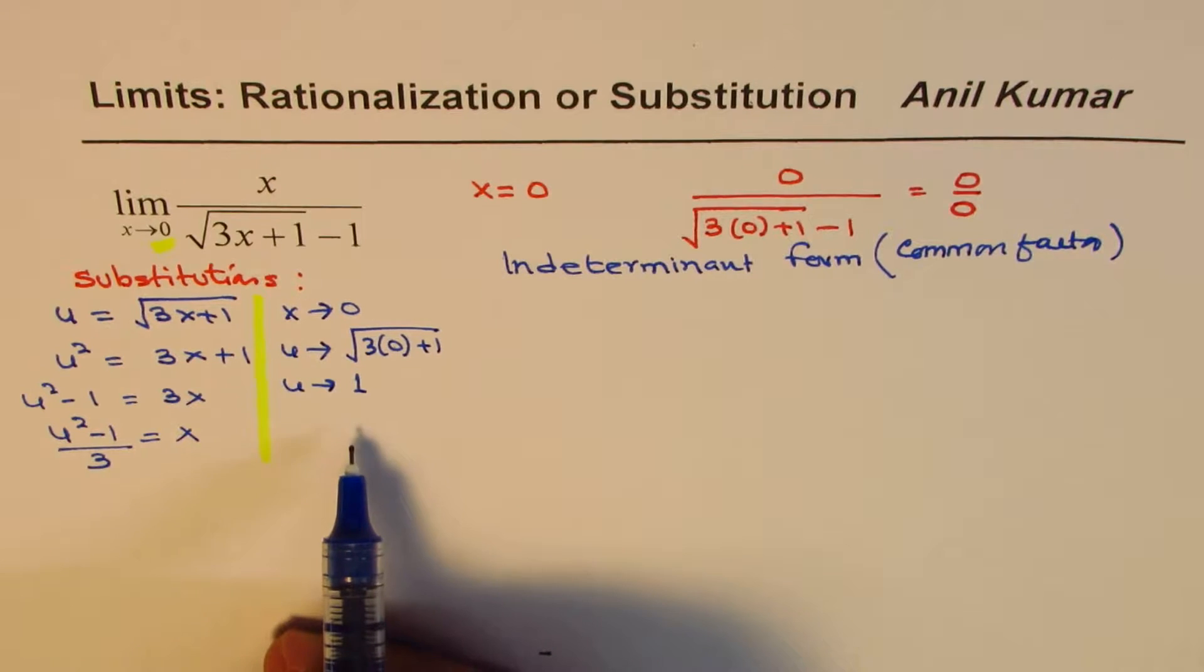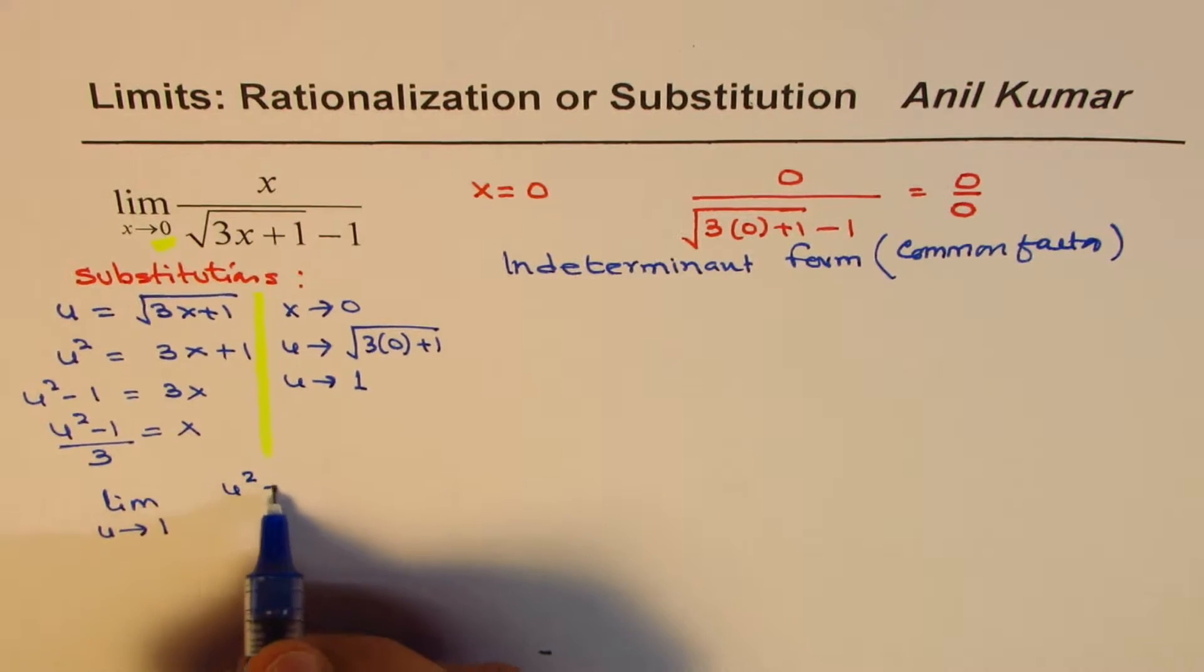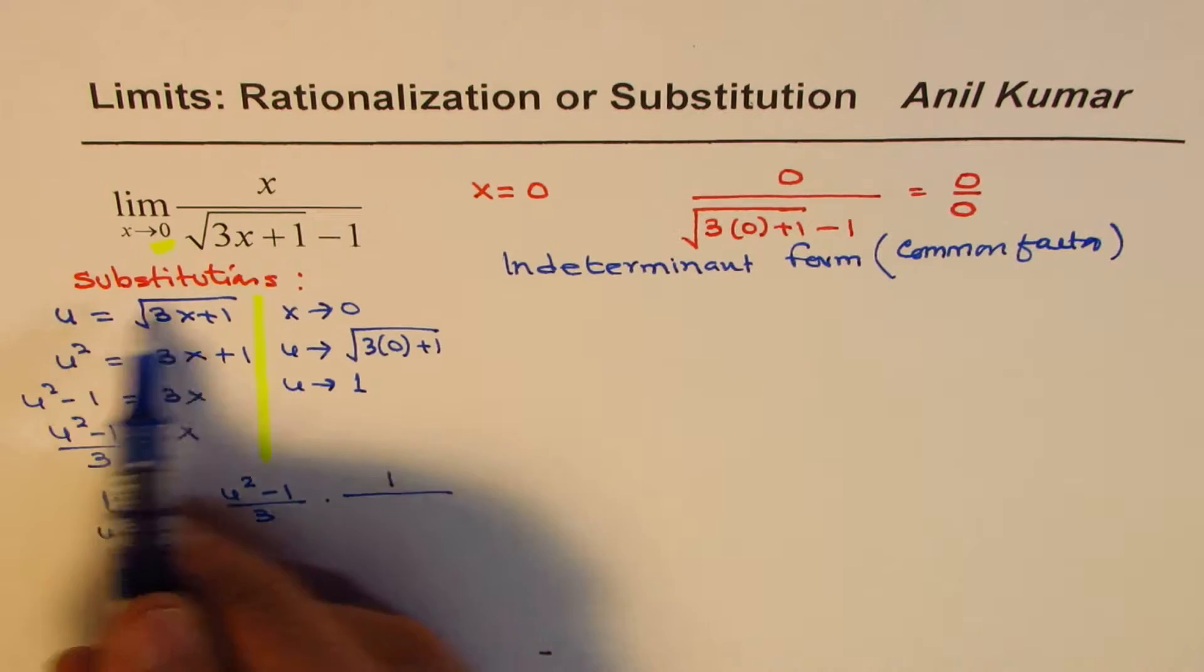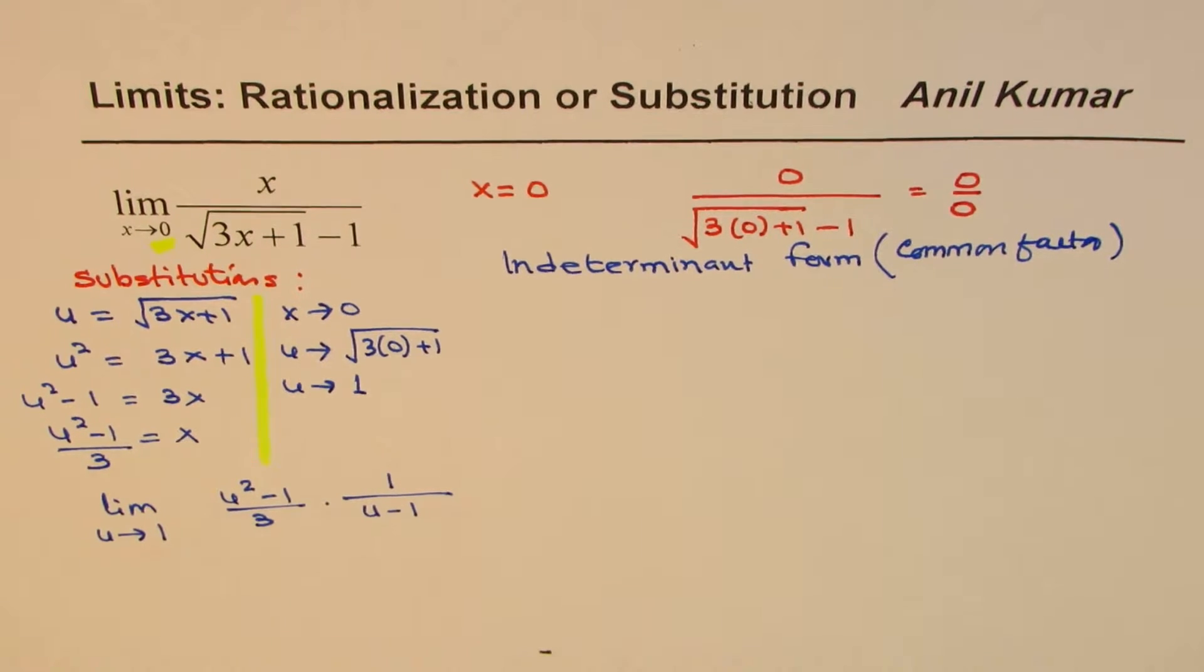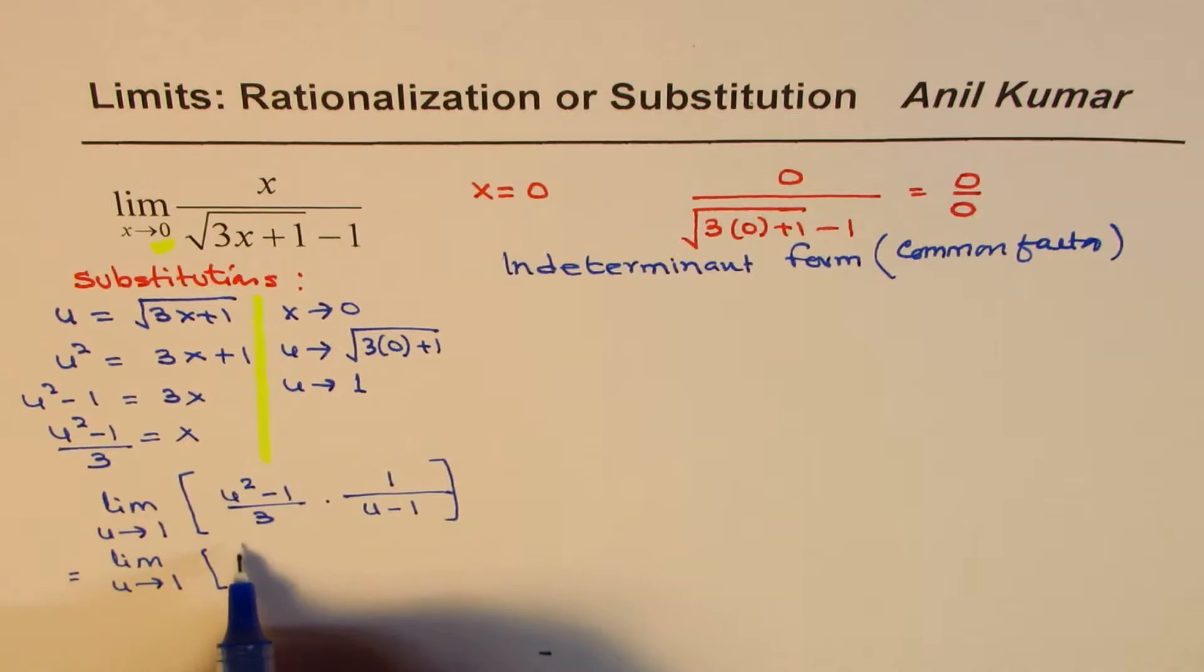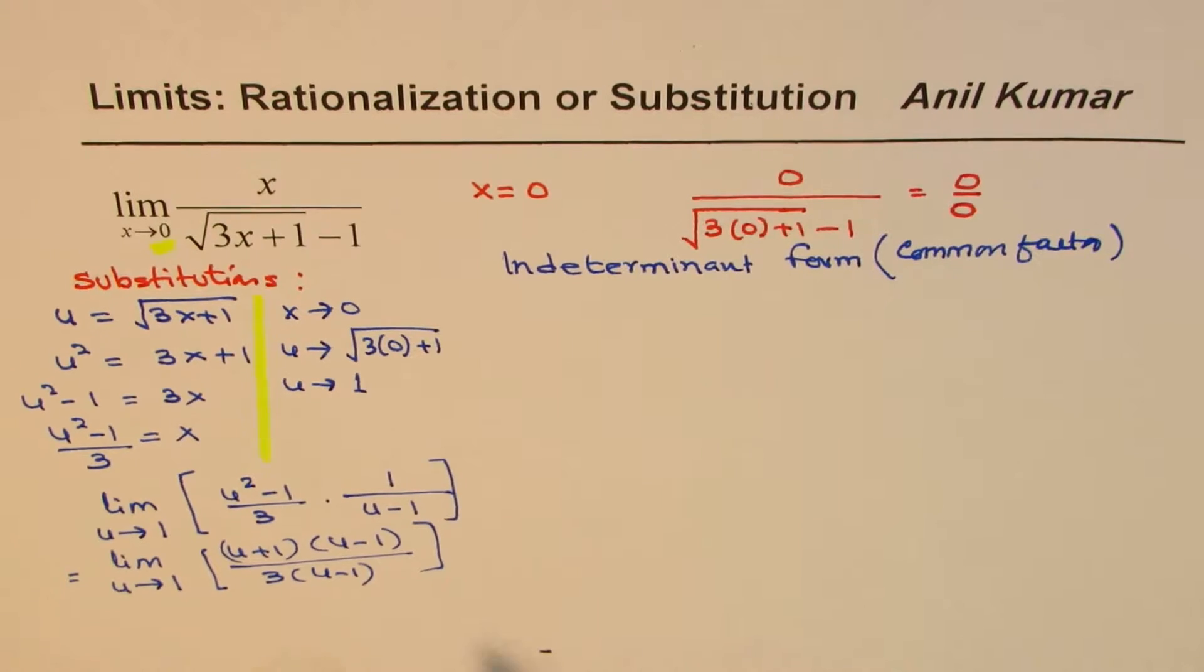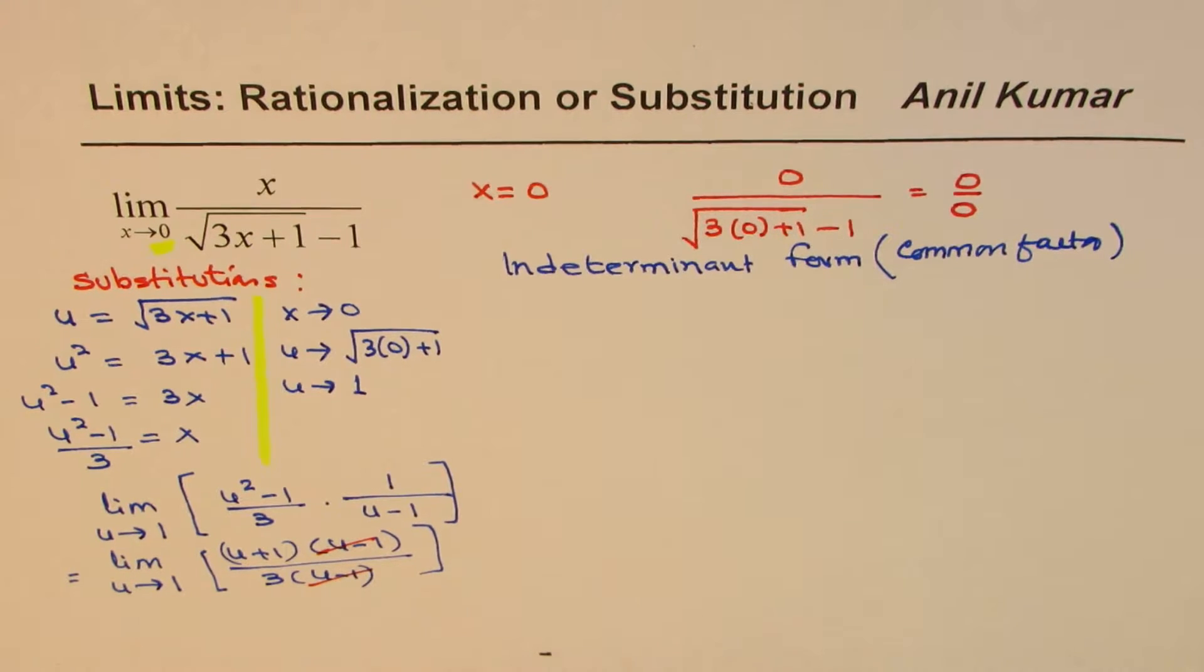Now using this substitution we can rewrite the question as limit u approaches 1, x as you can see is u squared minus 1 over 3 and let me write the other part as 1 over the square root part is u and then minus 1, so u minus 1. Now we have to find limit of this expression. Now that is not very difficult. See we could factor this. So we have limit u approaches 1 and in the numerator we have u plus 1 times u minus 1. The denominator is 3 times u minus 1. So you get this concept of common factor is now very clear. Do you see this u minus 1?